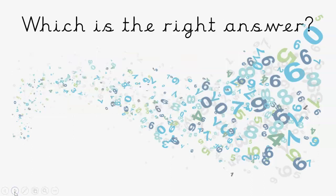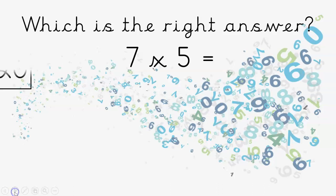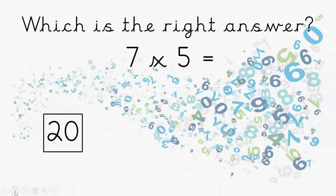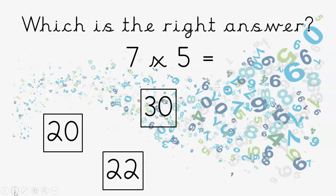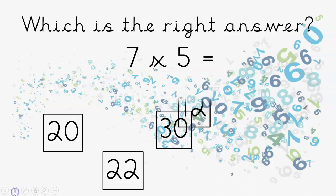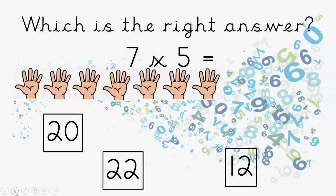Now, which of these is the correct answer? Have a little look — look for seven times five. Have a think before the numbers come in. What do you think they might be? Is it twenty? Is it twenty-two? Is it thirty? Or is it twelve? There's the seven lots of five. Well done if you said thirty.